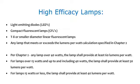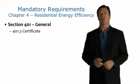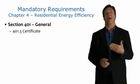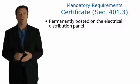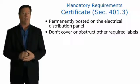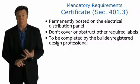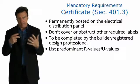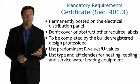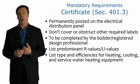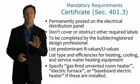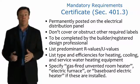High-efficacy lamps are typically LEDs, compact fluorescent lamps (CFLs), T8 or smaller diameter linear fluorescent lamps, or any lamp meeting the code lumen-per-watt requirements. Lumens, in simple terms, means the amount of light produced by a lamp or bulb. Watts is a measure of the amount of electricity consumed to produce that light. So more lumens means brighter light, but to meet the energy code requirements, look for lumens that are produced by lower wattage lamps. Every home must have a certificate permanently mounted to the electrical distribution panel. It cannot cover or obstruct any other required labels and must be completed by the builder or a registered design professional.